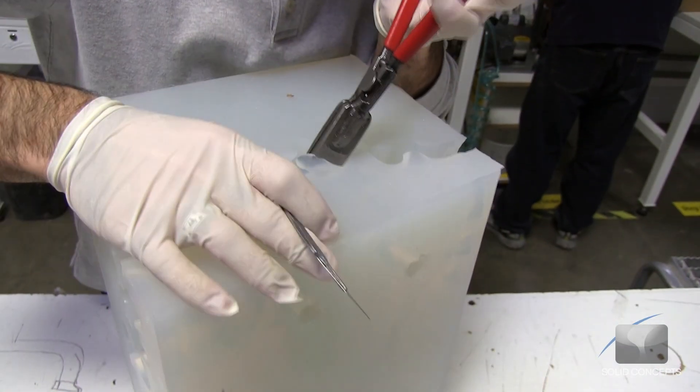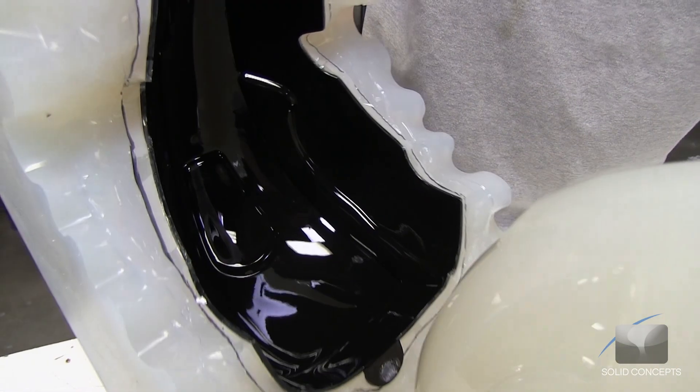The cast urethane process is a manufacturing method used to replicate identical parts from one to hundreds.